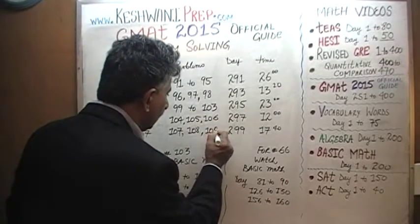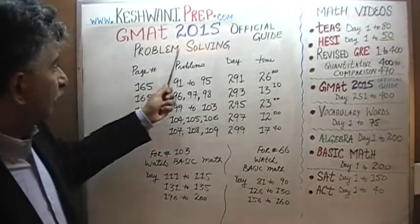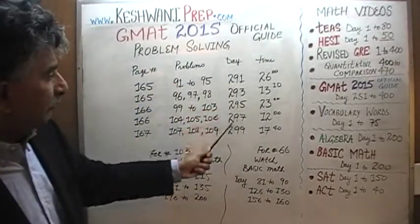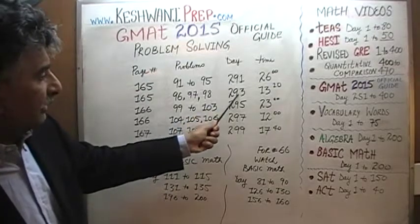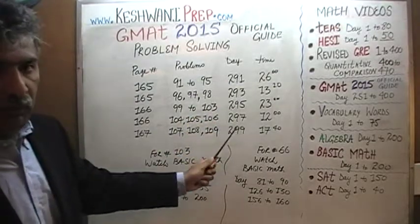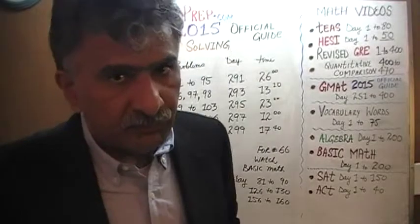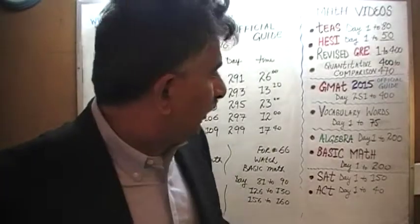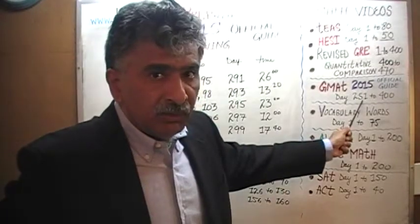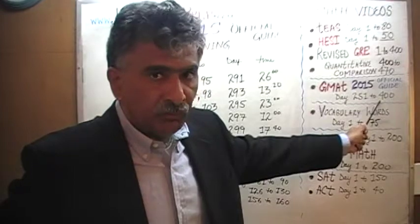Solutions to all the problem solving questions are presented on the odd-numbered days: 291, 293, 295, 297, 299. You will find the solutions to all the data sufficiency questions on even-numbered days, beginning with 252 all the way to 2400.